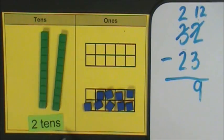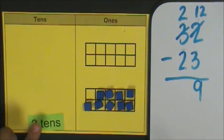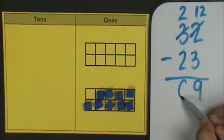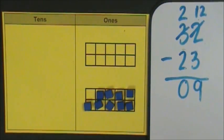Two tens minus two tens. I have zero tens. The difference between thirty-two and twenty-three is nine.